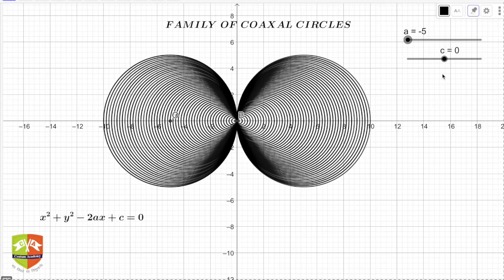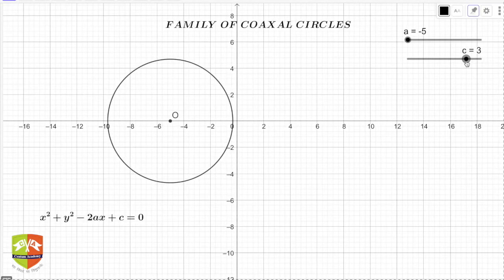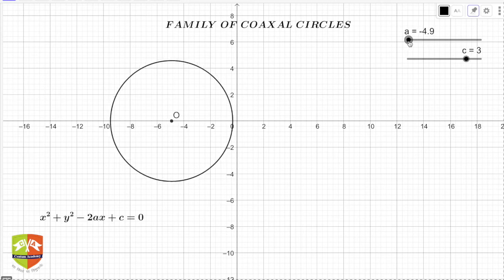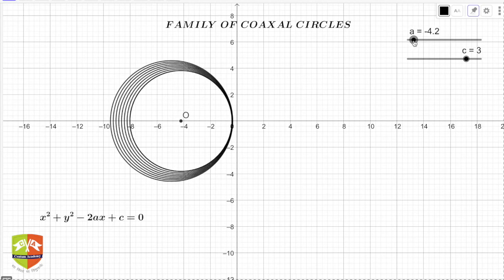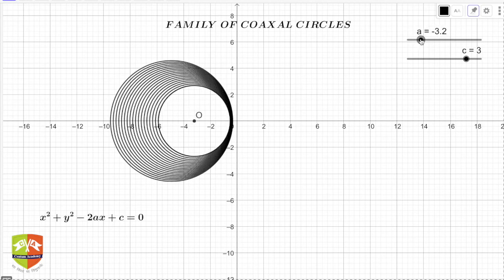Now I have taken the value of c to be 3. You can clearly see here there is some gap between the circle and the y-axis. The y-axis is not touching the circle. Now what happens if I change the value of a? As the center moves, you can see, just have a look at the center's path.